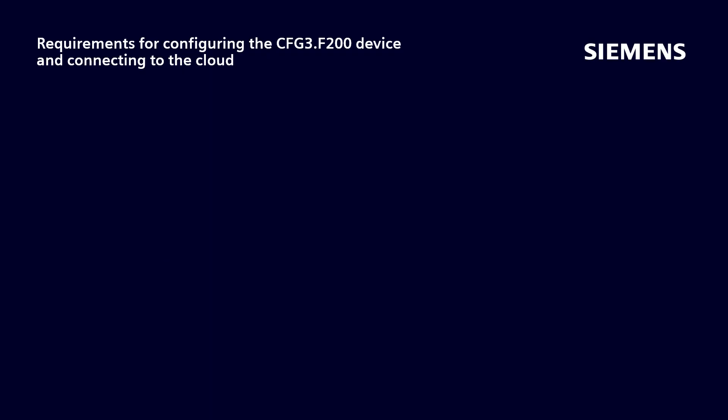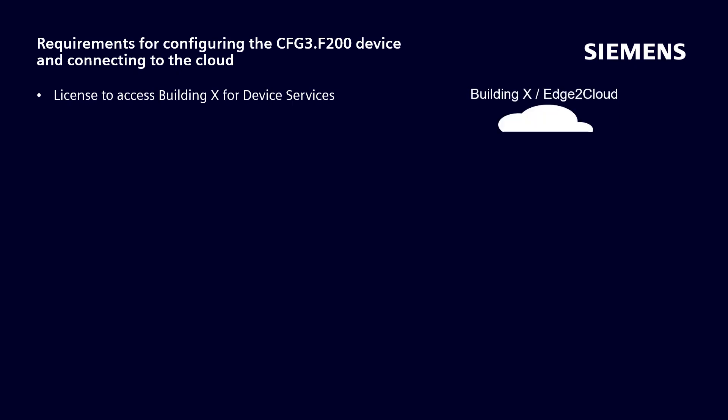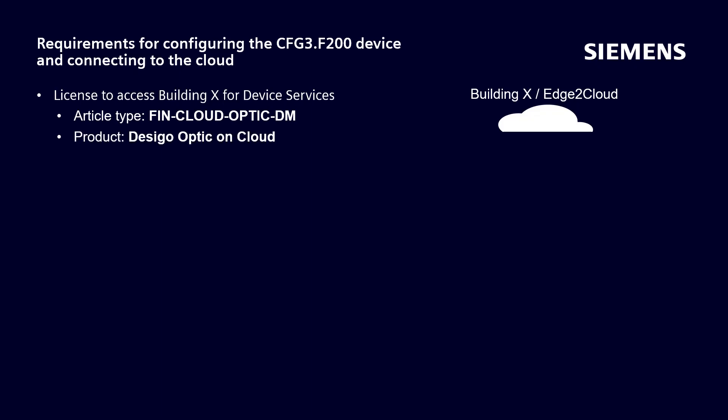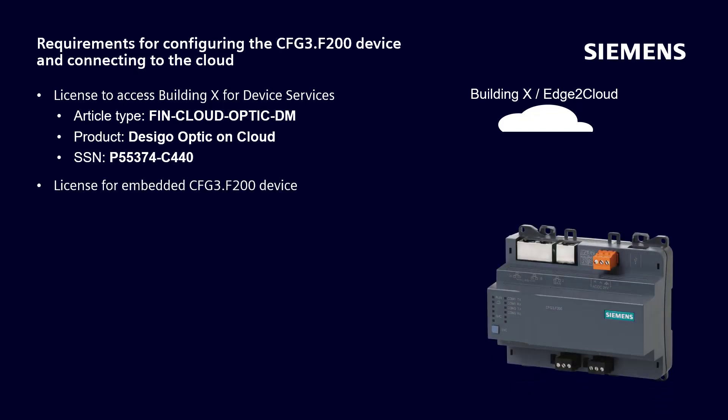What are the requirements for configuring the CFG3F200 gateway and connecting to the cloud? For access to the cloud and to be able to include the Decego Optic Device in the Building X Devices services, we need a license that includes this service. A license is required for the embedded Decego Optic Device so that both the configuration and then the project or projects can be created.